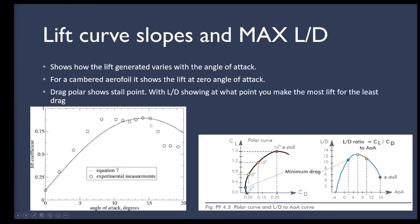Stall is due to flow stagnation and flow separation over the top of the wing. Another interesting point is your lift at zero angle of attack — here the airfoil is generating about 1.25 CL at zero degrees, which implies this is a cambered airfoil still generating lift at zero angle of attack. If this were a zero-camber or symmetrical airfoil, the intercept would pass through zero.